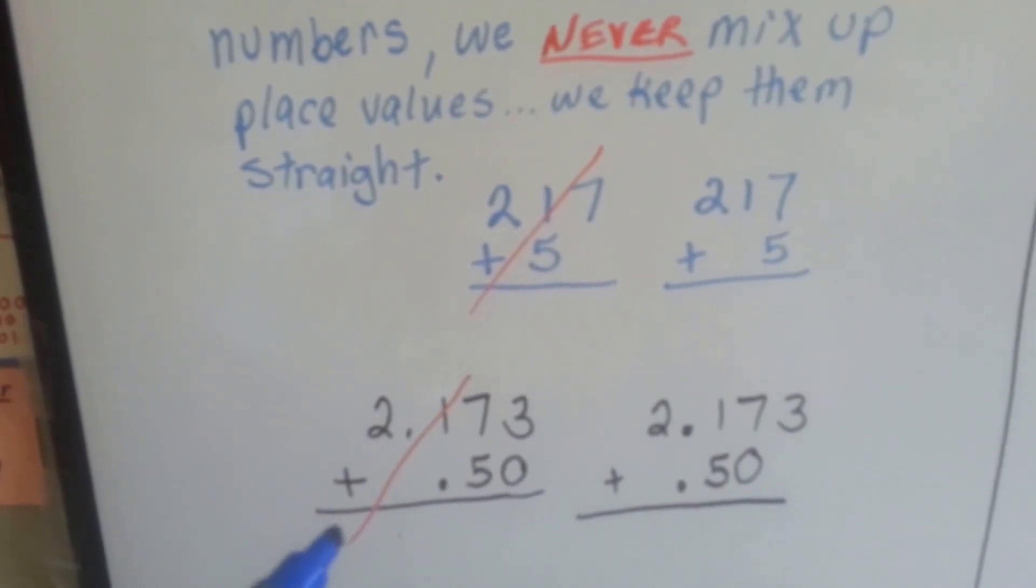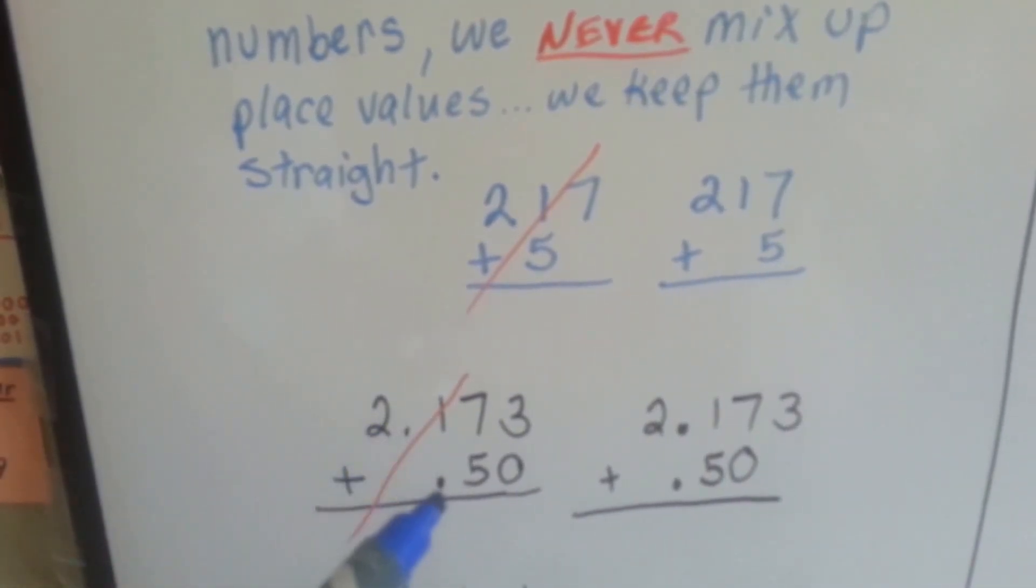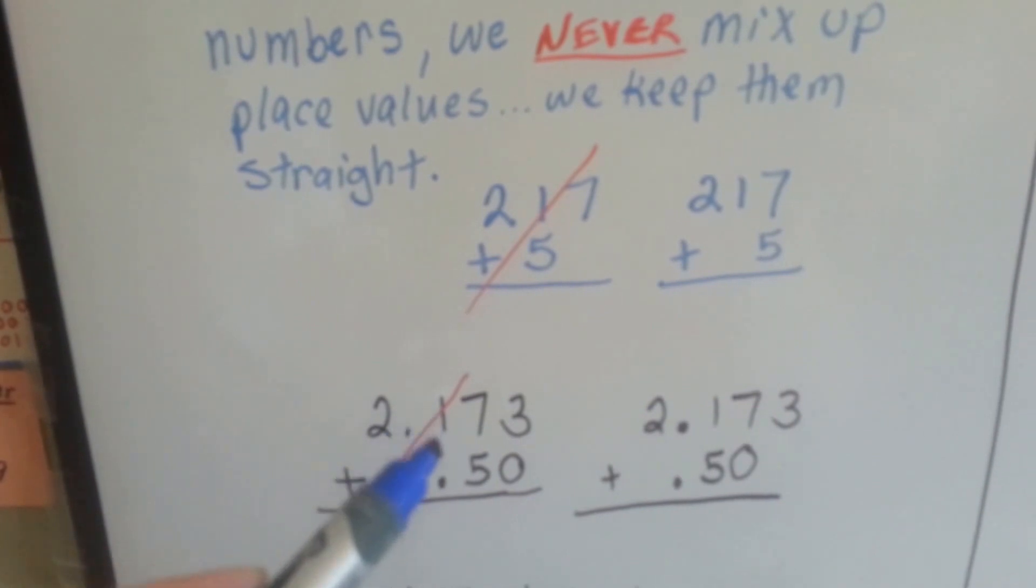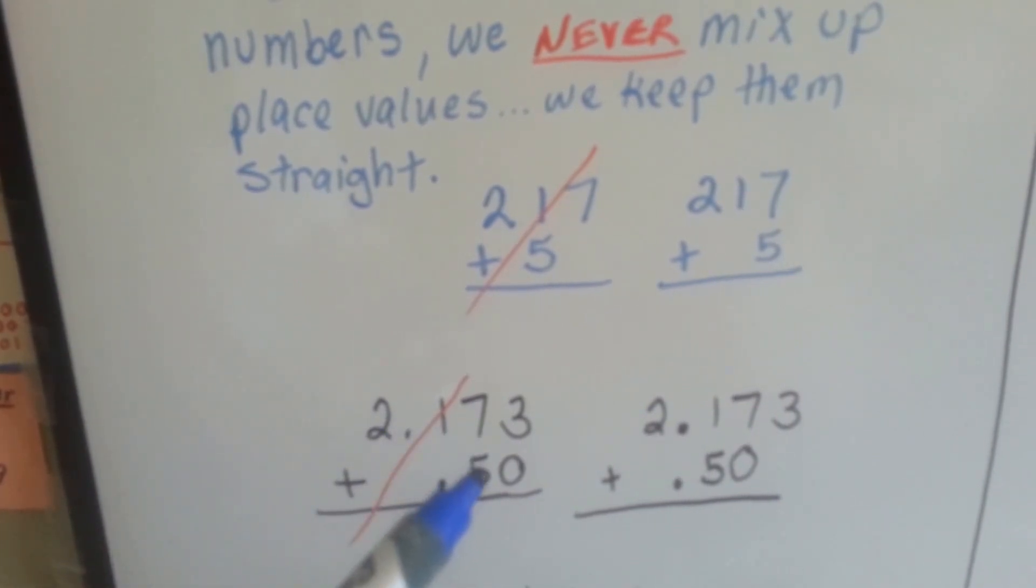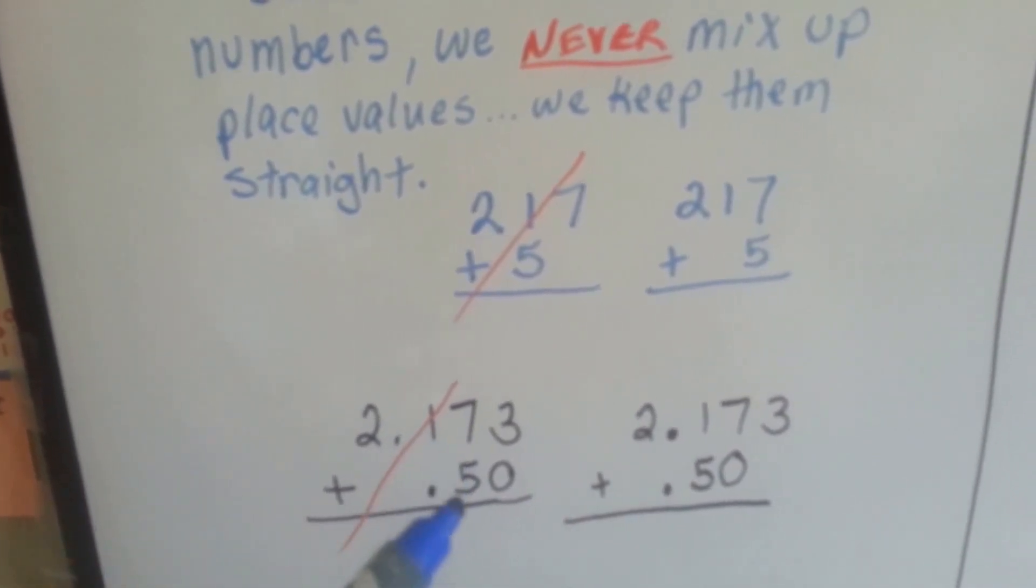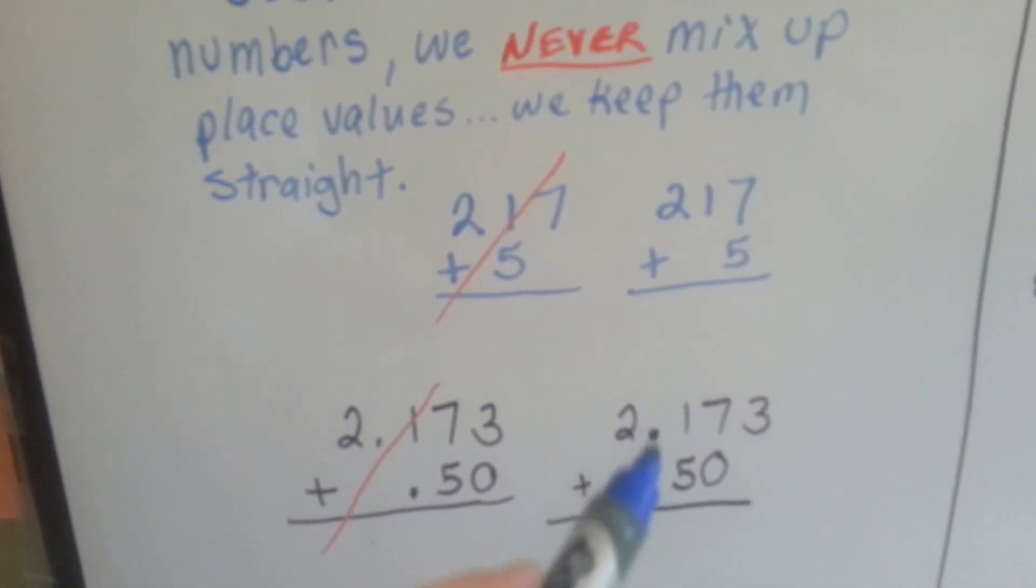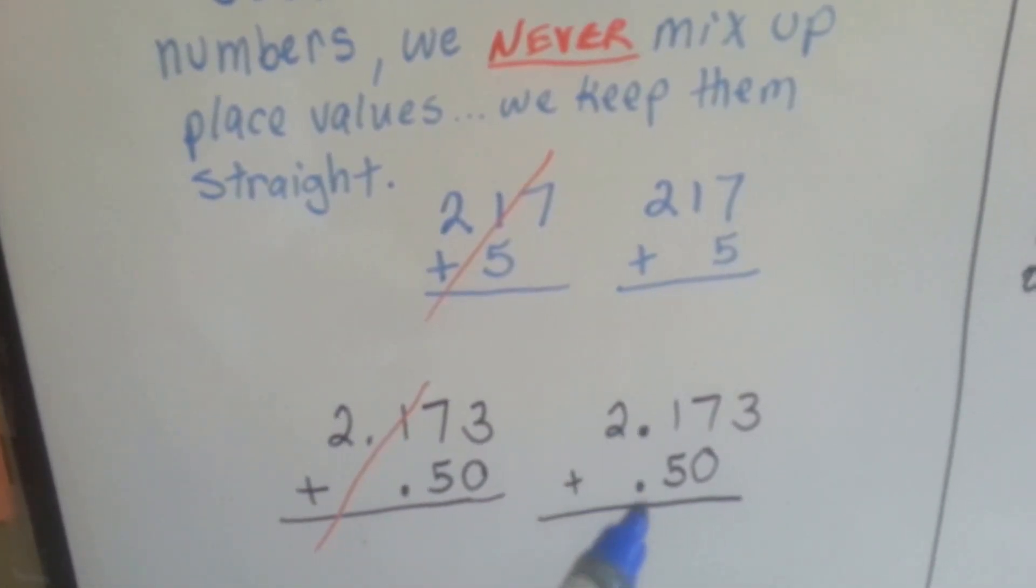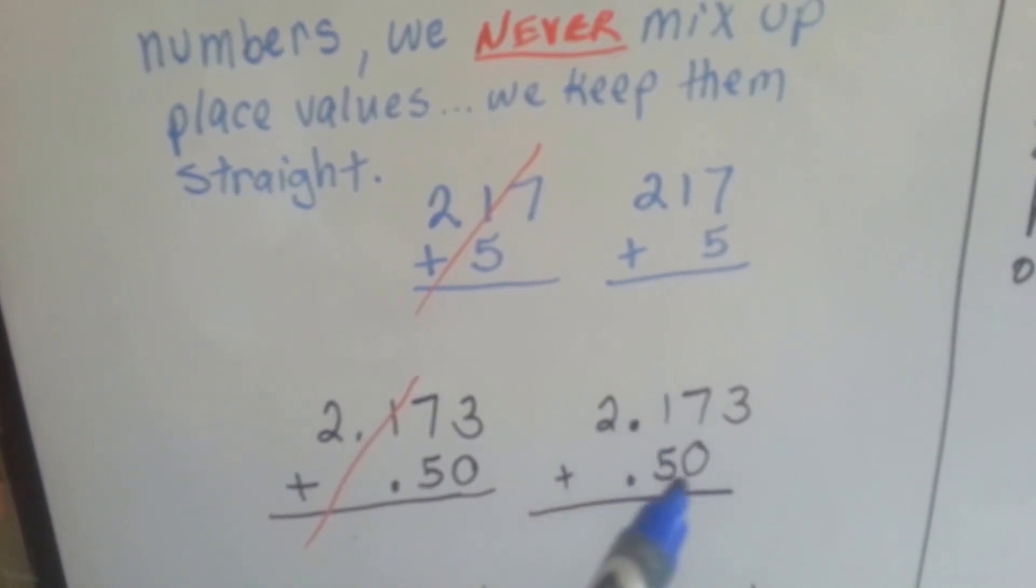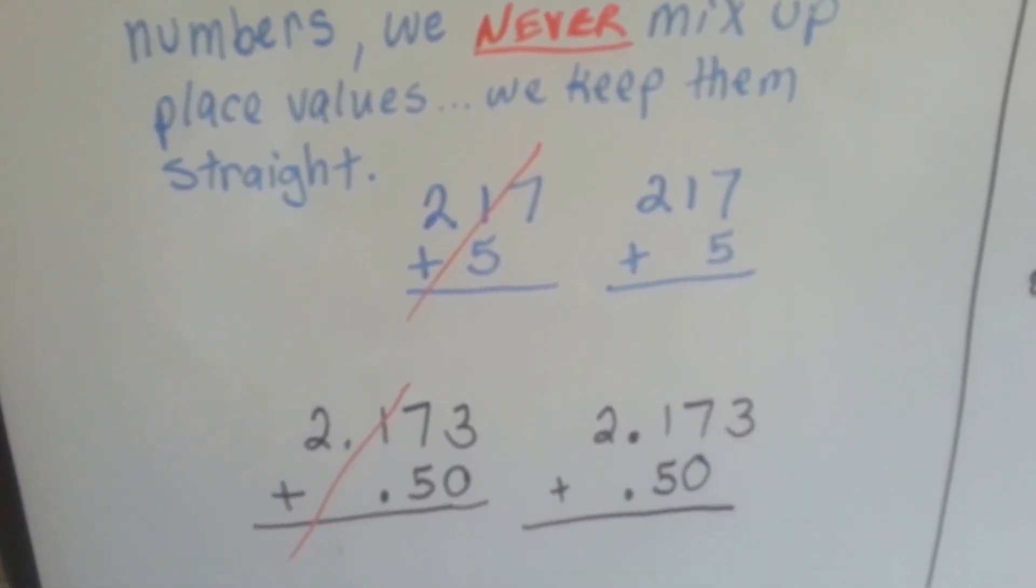Same thing with decimals. Wherever the decimal point is tells you where the tenths are. We wouldn't add the 5 tenths to the 7 hundredths. That would be wrong. You want to line them up straight and perfect, so you add the 5 tenths to the 1 tenths and keep our place values in order.